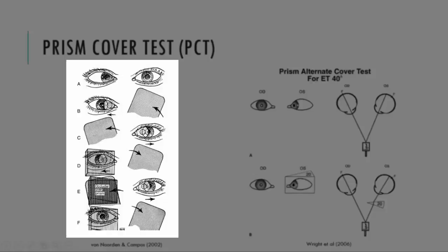So for the Prism Cover Test, we always put the prism in front of the deviating eye. If you have an alternating strabismus, in concomitant strabismus, you can put it in front of the right or the left eye. It won't matter, so you can choose on that occasion. But otherwise, if you have a preference for fixing with one eye over the other, then you would always put the prism in front of the deviating eye. In this instance, the patient prefers to fix with the left, so we put it in front of the right.